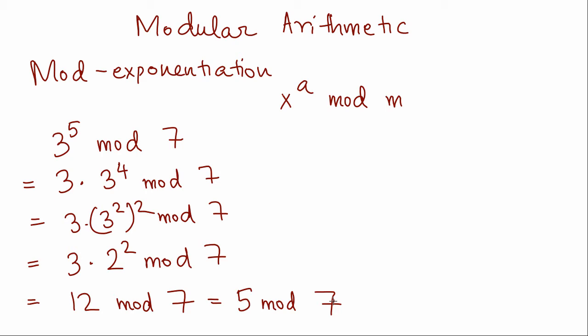Moving on to finding inverses. The inverse of a number x mod m is just a number a such that ax is 1 mod m. And this inverse exists only when the GCD of x and m is 1.